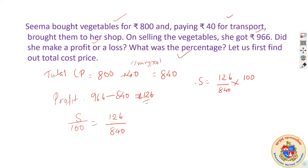We are multiplying both sides with 100 — 100 will get cancelled. In this case we have to multiply and solve it. This can be cancelled: 126 and 840 — dividing, this becomes 5 to 10, then 4 to 42. There is a relationship — this cancels and it is 3 times. 15 is the answer. That means 15% is the percent of profit by Sima.